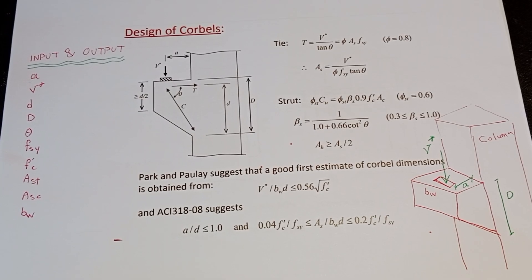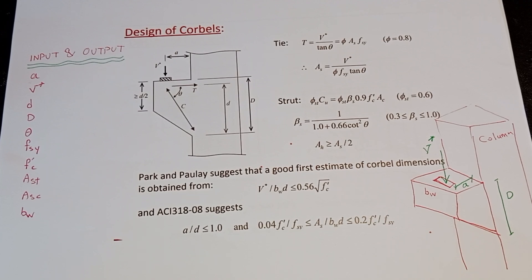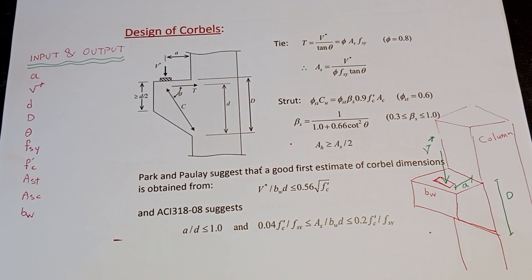Today I'm talking about corbel design, which is a critical element in transferring the crane load to a safe foundation — through the elements under the corbel, or through the corbel to the column. We're dealing with big loads and we need to make sure the corbel is safe and transferring load safely to the column, which in turn transfers the load to the foundation. An unsafe design may have serious effects on the structure.